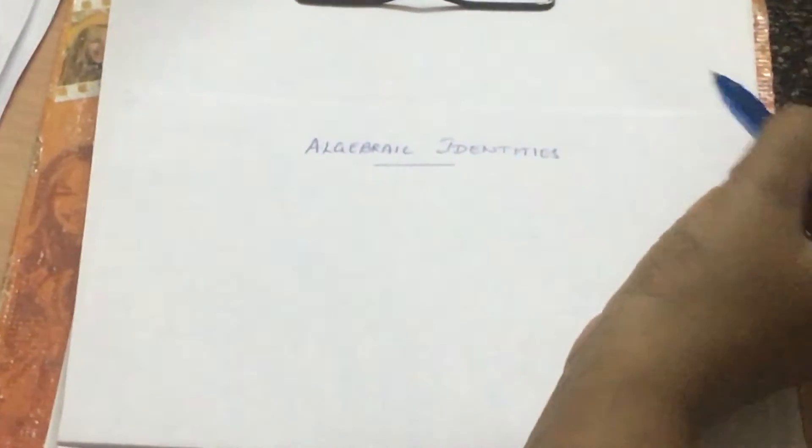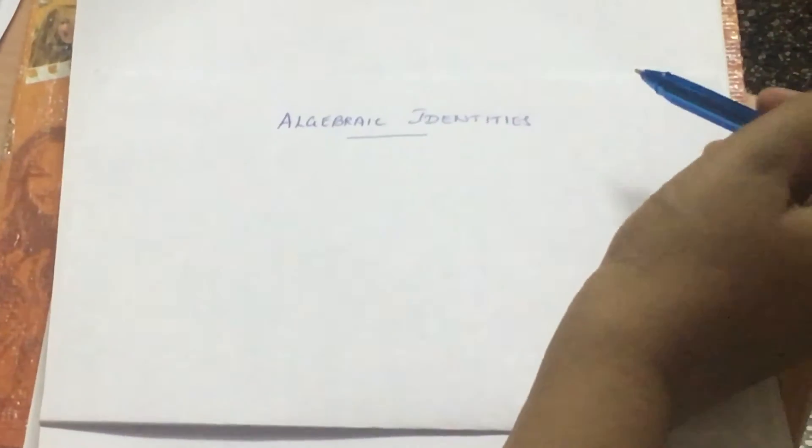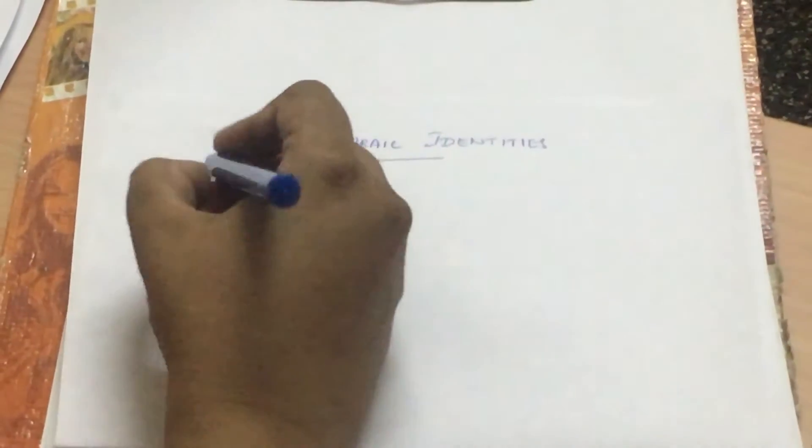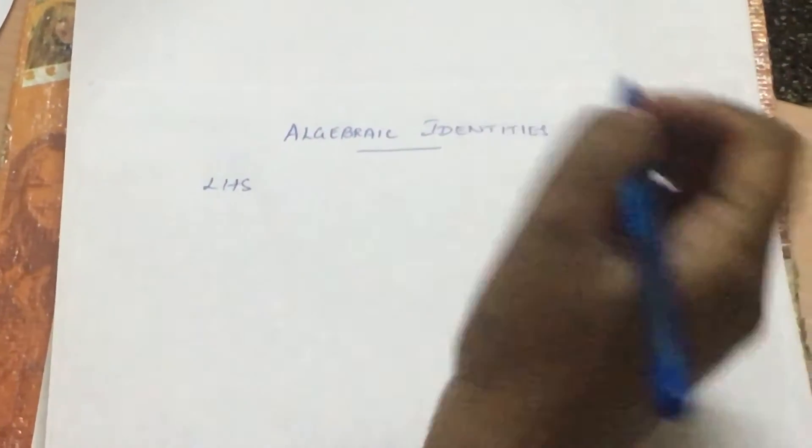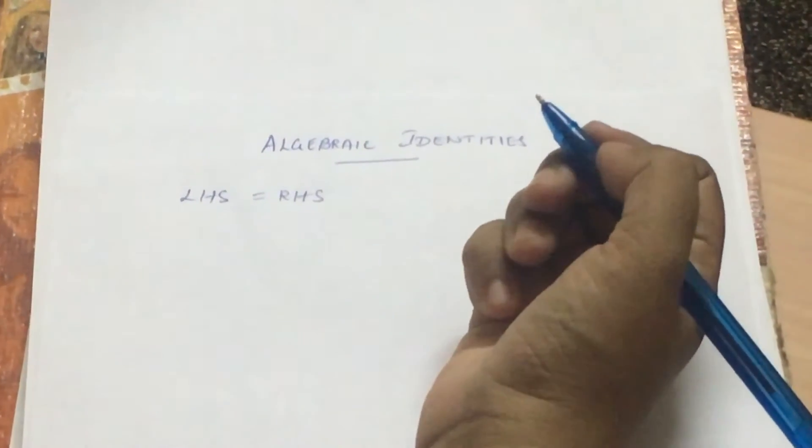Hello everyone, today we are going to be learning about algebraic identities. An identity is an equality which is true for all values of the variable. That is, given some LHS for any variable, it is equal to the answer which is obtained on the RHS. I will explain better with an example.